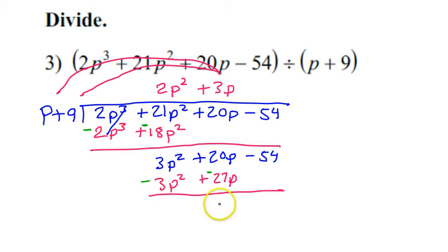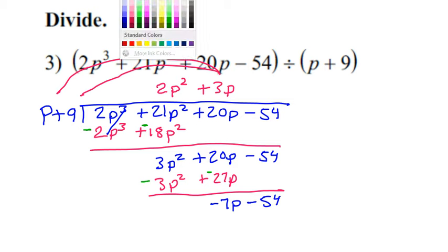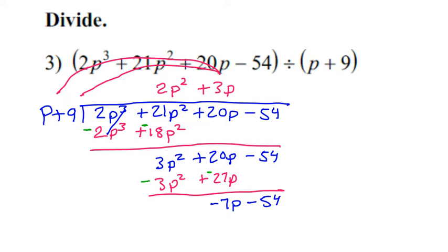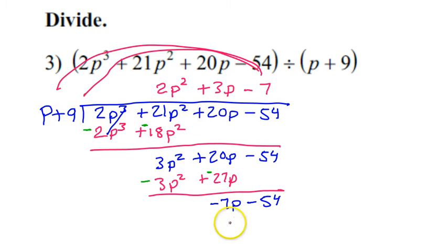So I'll have negative 3P squared and negative 27P. So that's going to give me negative 7P, and I bring down the minus 54. So I start over. So now I say P times what is going to give me negative 7P. So that will just be negative 7. And I take my negative 7, and I do the distributive property. So negative 7 times P is negative 7P. Negative 7 times 9 is negative 63.